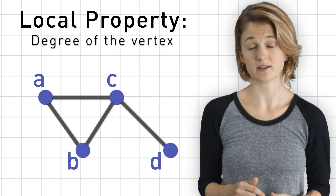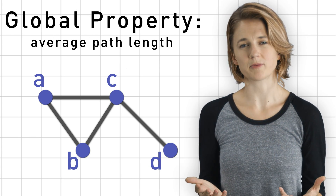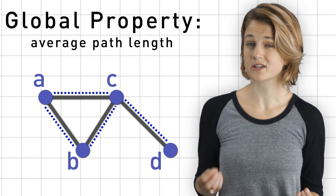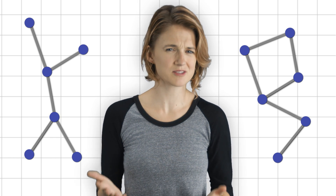One can study local properties of a graph, like the degree of a vertex — which is the number of edges connected to that vertex — or global properties, like the average path length to get from one vertex to another. But knowing only local or only global information about a graph generally can't tell you about its entire structure. For example, these two graphs have the same average path length, but they look completely different.